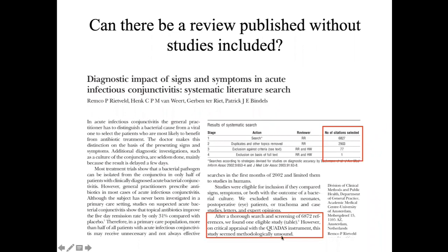So here you have it — a systematic review published in the BMJ with zero studies included. Mitchell says it can be published if it is by well-known authors. Martina says probably not, but maybe a specialized journal might be persuaded.